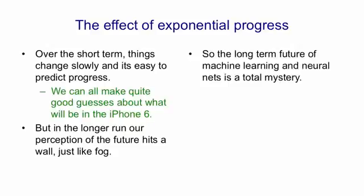So the long-term future of machine learning and neural nets is really a total mystery. We have no idea what's going to happen in 30 years' time. There's just no way to predict it from what we know now, because we're going to get exponential progress.